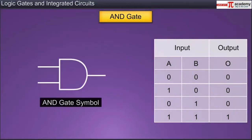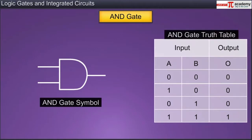An AND gate is represented by the symbol shown here. The table that lists all the logical input and output combinations of a logic gate is called the truth table of the logic gate. Thus the table shown here is the truth table of the AND gate. The output of an AND gate is one only when inputs A and B are both one.